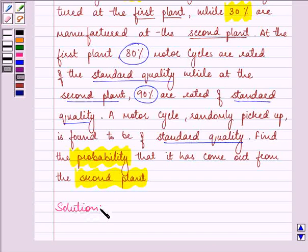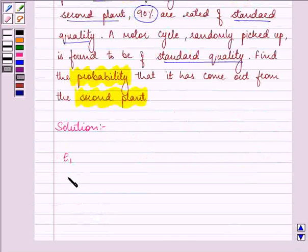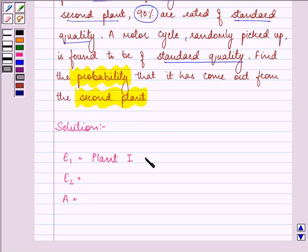So here, suppose E1, E2, and A are the following events. Event E1 is the event of choosing plant 1.